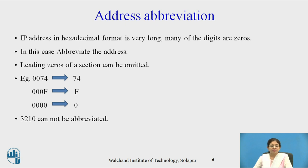Similarly, if there is 0000 in an address then the first three zeros are omitted and only 0 remains. Note that if the address is like 3210, it cannot be abbreviated because there is no leading zero.